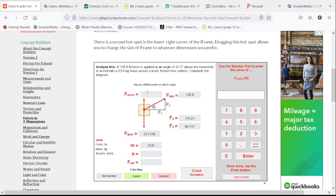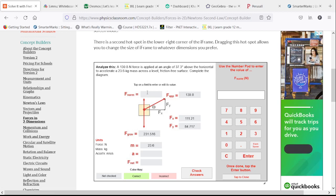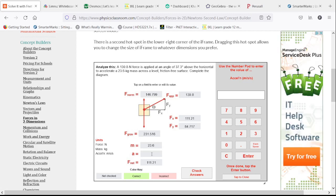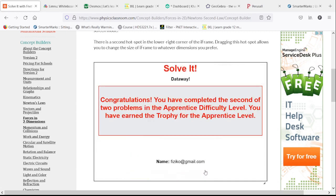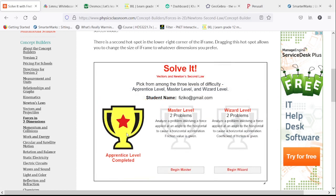Our mass is 23.6. Our normal force is the gravitational force minus the y component of our applied force. That gives us 146.8. Our net force is entirely in the horizontal component. So our acceleration is our horizontal component divided by the mass, which is 4.71 meters per second squared. That solves the apprentice level.